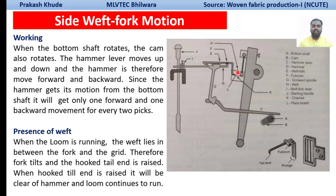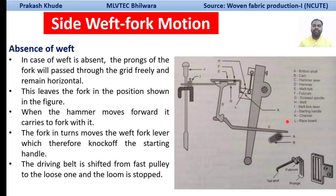When the loom is running and weft lies between the fork and the grid, the fork tilts and the hook end of the tail is raised. The front end of the fork comes in contact with the weft, and due to the tension in the weft this end tilts backward, raising the hook tail end. When the hook tail end is raised, it clears off the hammer notch and the loom continues to run.